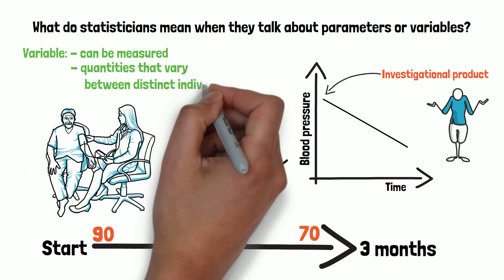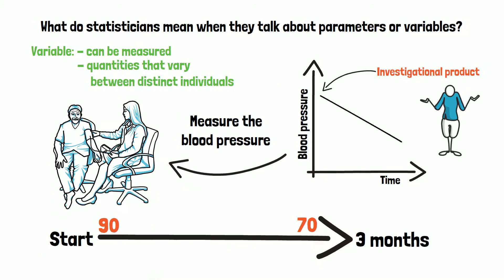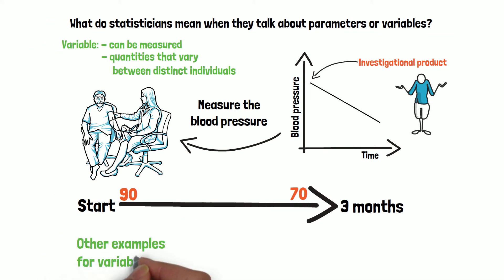So variables in general are quantities which vary between distinct individuals, in this case patients. Other examples for variables are for example the size, weight or vision of a person.